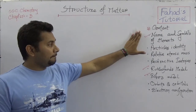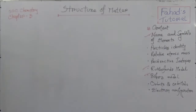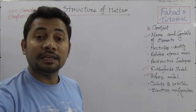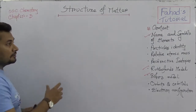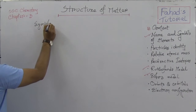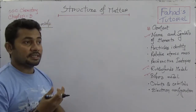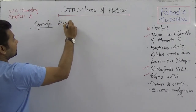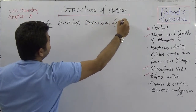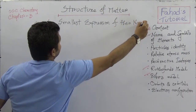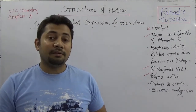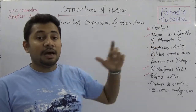So first we see these topics listed here, and we need to understand what are the names of these elements and how they come from. You must know the English and Latin names of these elements. Focusing on the part of the name and symbols, symbols of elements are the smallest expressions of their names — from English names, Latin names, and even Arabic names.